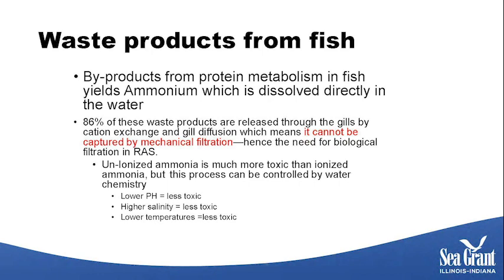The byproducts from protein metabolism in fish yield ammonia or ammonium, which dissolves directly into the water. 86% of these waste products come directly from the fish's gills through cation exchange and gill diffusion. This means we cannot capture the waste products from our fish — they're dissolved directly in the water — so we have to rely on biological filtration.